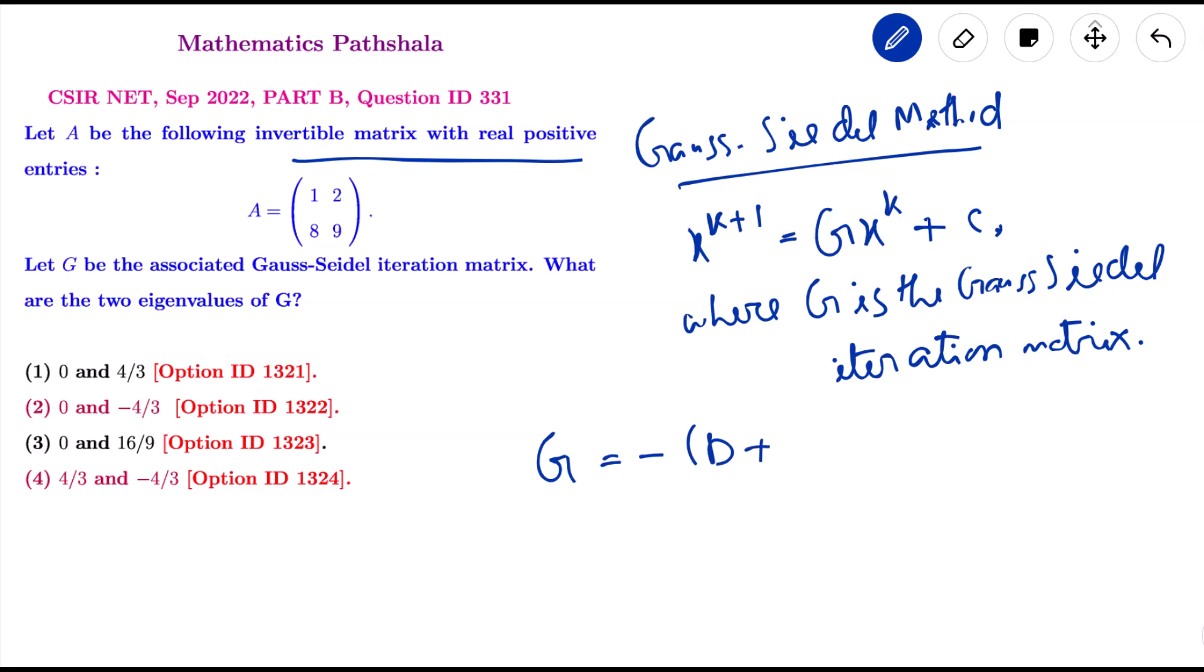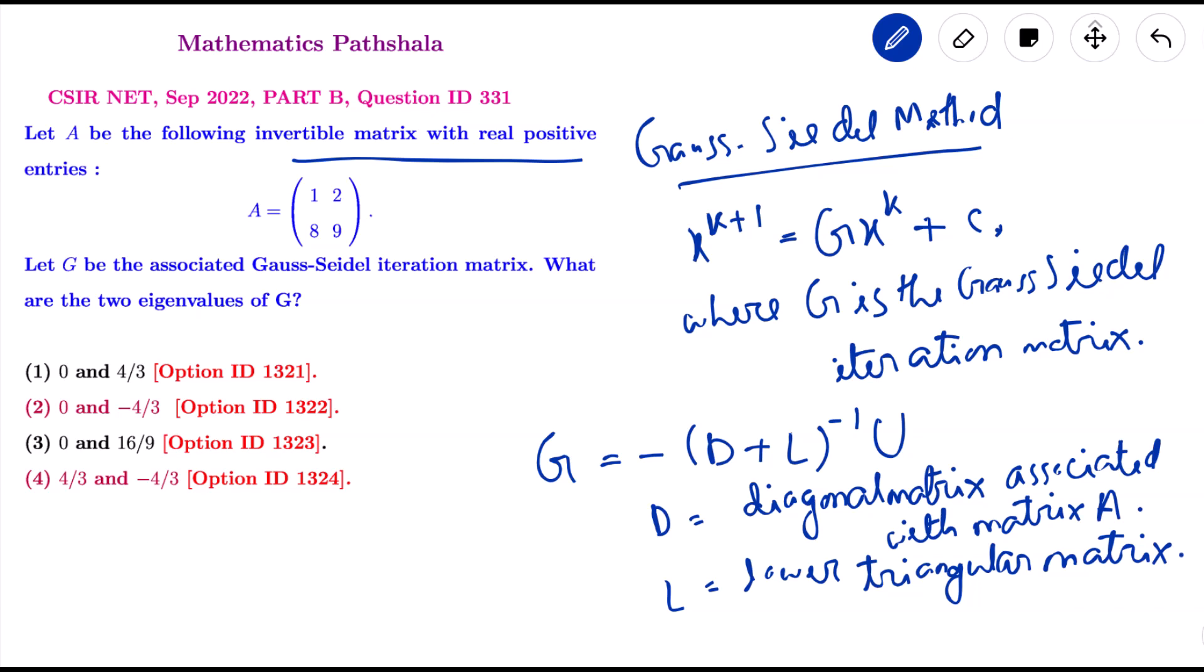We can write G as: G equals minus (D plus L) inverse times U. Here, D is the diagonal matrix associated with the given matrix A, L is the lower triangular matrix, and U is the upper triangular matrix.